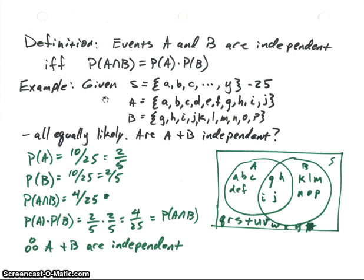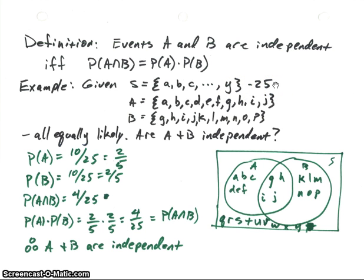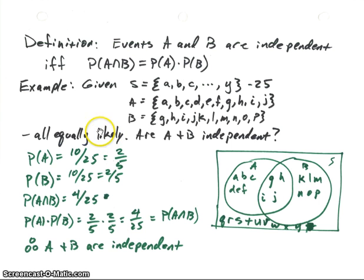Let's look at an example — a made-up example. Suppose we've got this sample space consisting of the letters of the alphabet, A, B, C, all the way through Y. Notice that Z is left off, so there are 25 elements in that sample space. Let's make set A be the letters A through J, and set B be the letters G through P. All elements are equally likely. The question is: are A and B independent of each other?